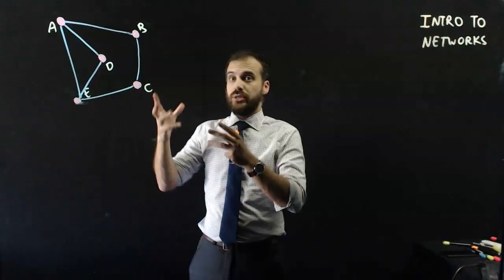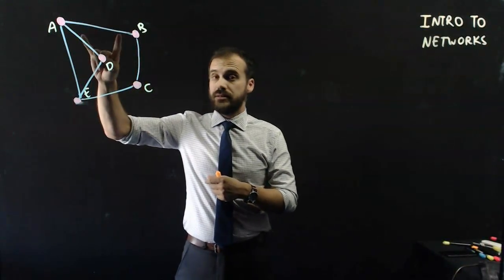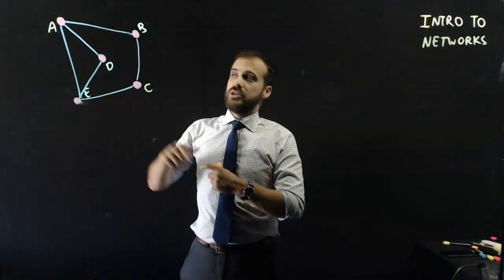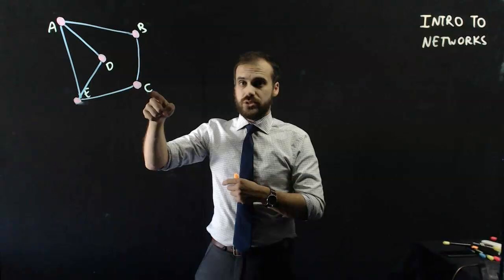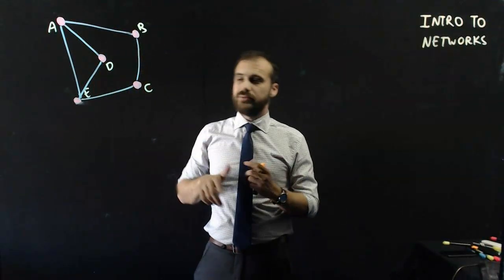This might also be a friendship group, where A and B are friends, but A and C are not friends, but B and C are friends. So if A wanted to talk to C, they might need to go through B, a bit of like schoolyard stuff.